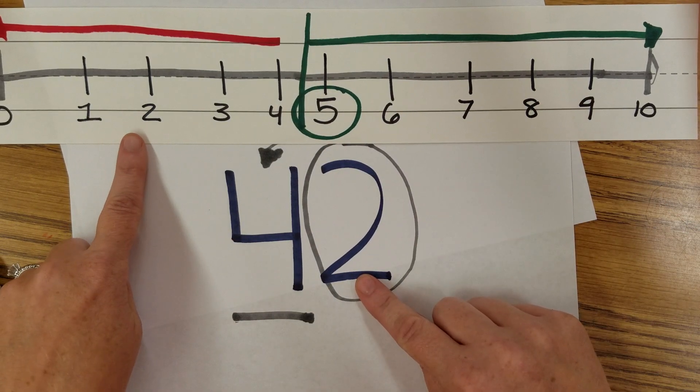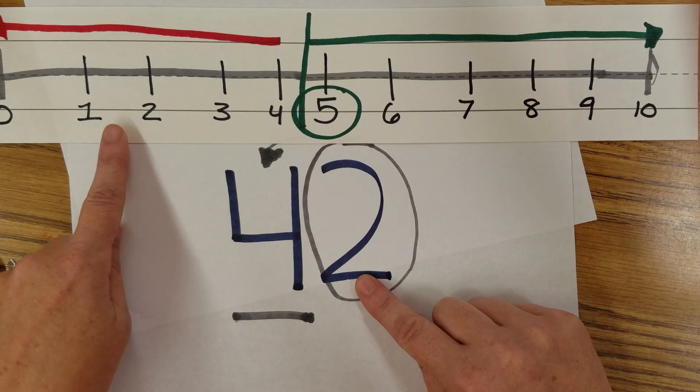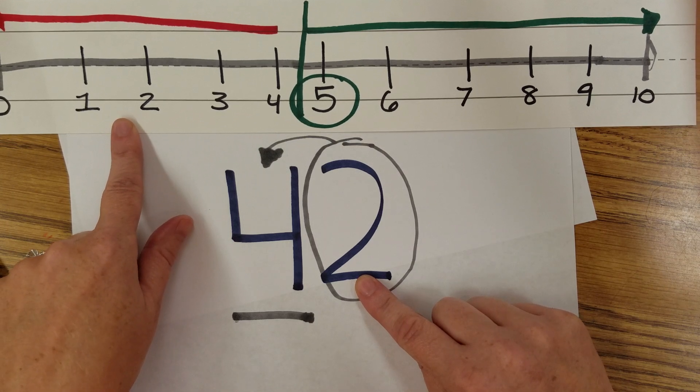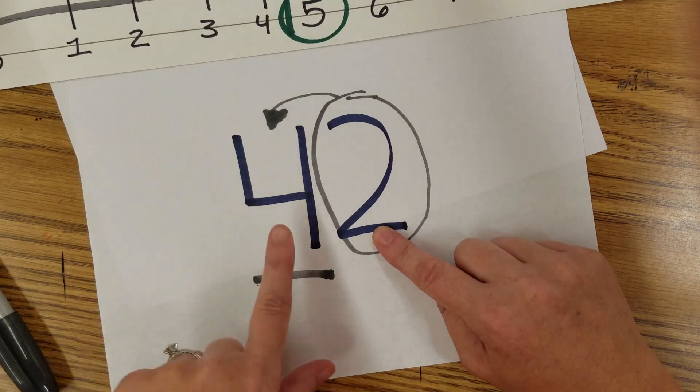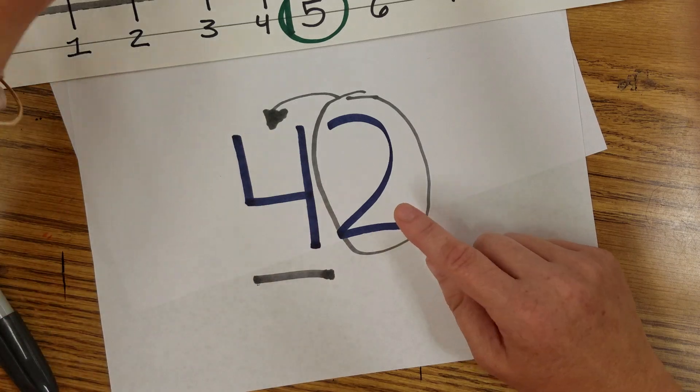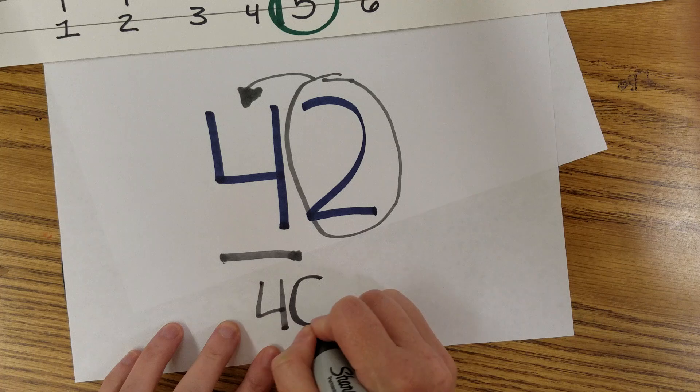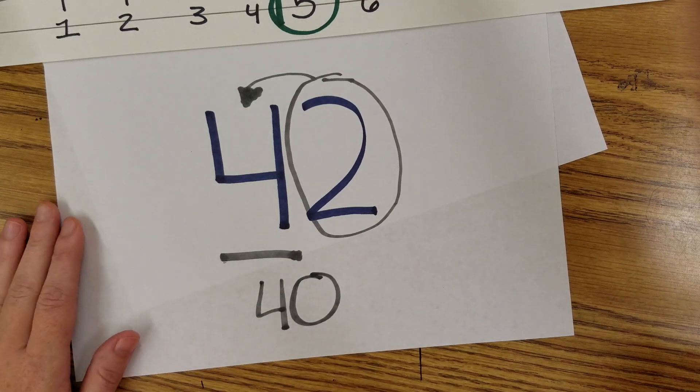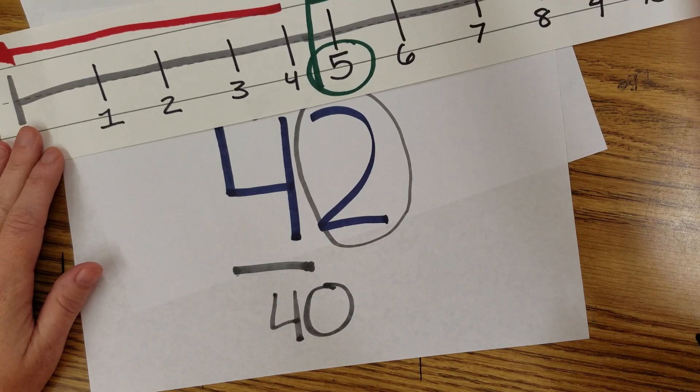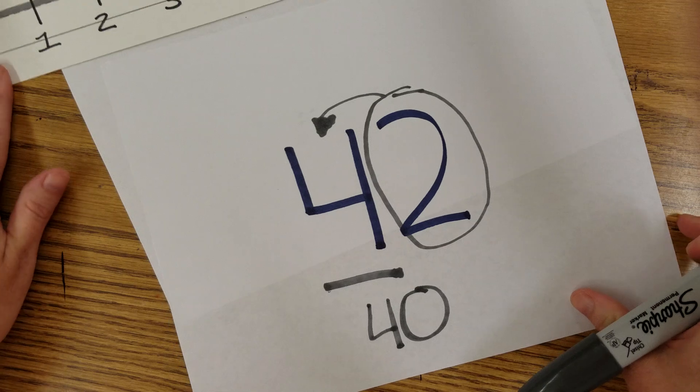We can see that the two is a small number and it's going to tell you to stay at the tens. This one will stay. Your ten is going to stay at four. Now you put the zero in the ones and you're going to take it to forty. So forty-two is going to round to forty.